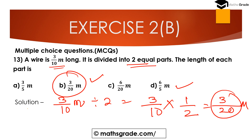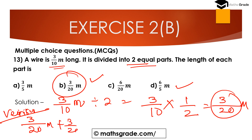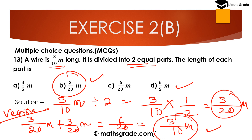The length of each part is 3/20 meter. To verify: adding 3/20 and 3/20 gives 6/20. The LCM is 20, so 3 + 3 = 6, giving 6/20 meter, which simplifies to 3/10 meter — confirming our answer. So the length of each part is 3/20 meter.